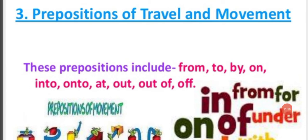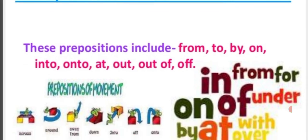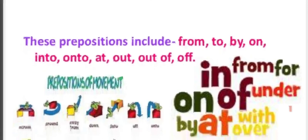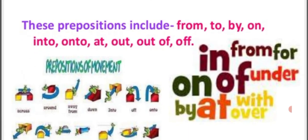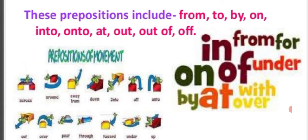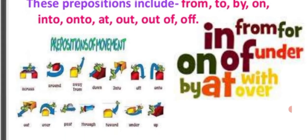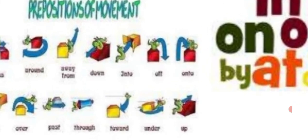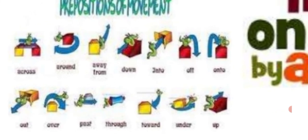Now the third type: prepositions of travel and movement. These include: from, to, by, on, into, onto, at, out, out of, off. These are the prepositions of movement. You can see how they are used.